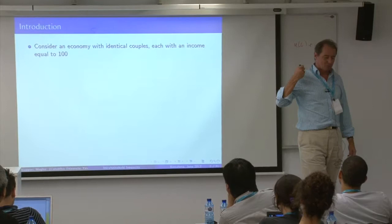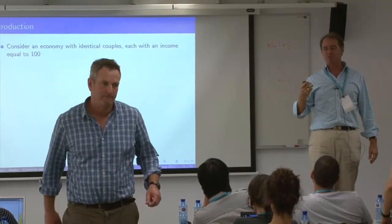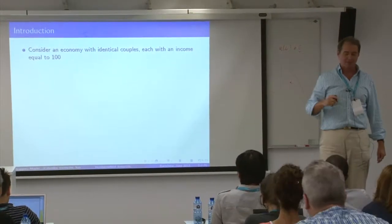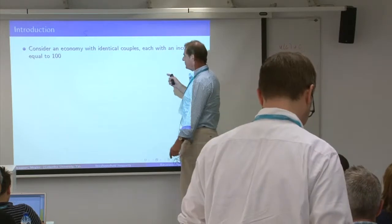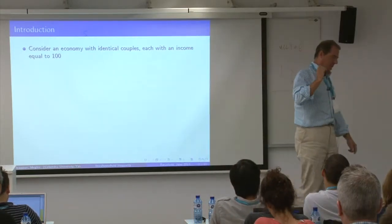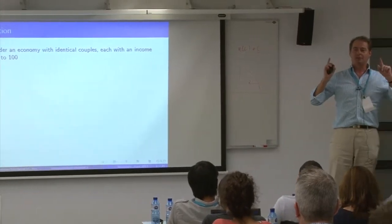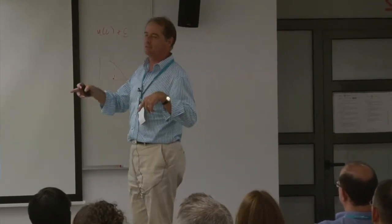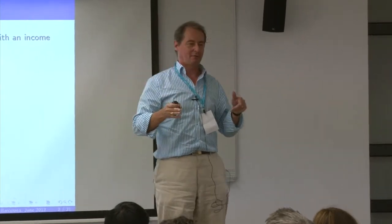The first time I presented this I was in front of inequality people, so this slide is relevant for them. It might not be that relevant for this audience, because what I'm going to say is something we're all convinced of. But one thing that makes me a little bit nervous is statements like — I quote — 'one third of the increase in inequality between 1980 and 2000 is due to the increase in single-person families.'